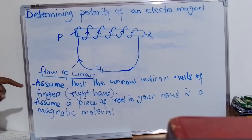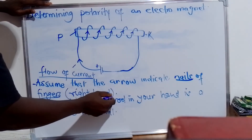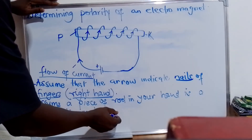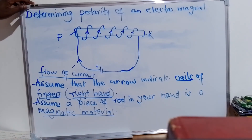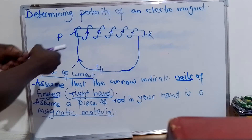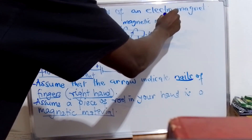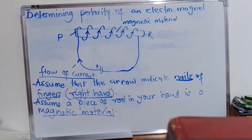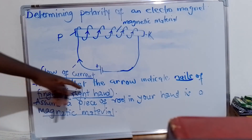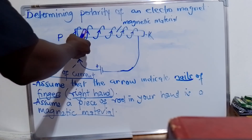As I said, assume that the arrows indicate the nails of the fingers, and it must be the right hand. Assume a piece of rod in your hand is the magnetic material. We have this rod to indicate the magnetic material. These arrows must indicate the nails of our fingers, and we must position ourselves such that these nails face our chest.